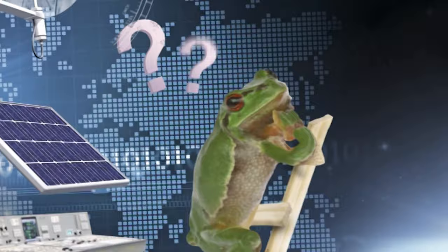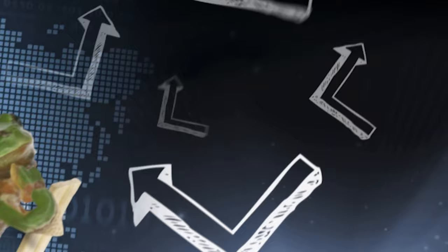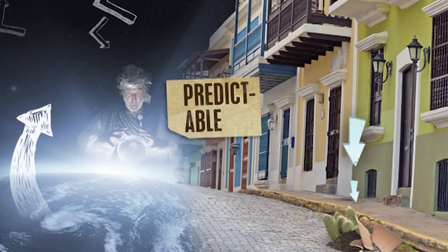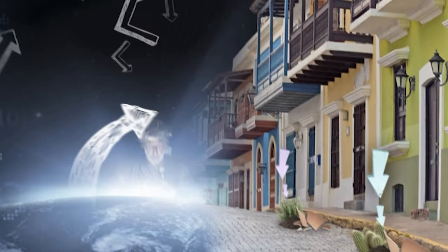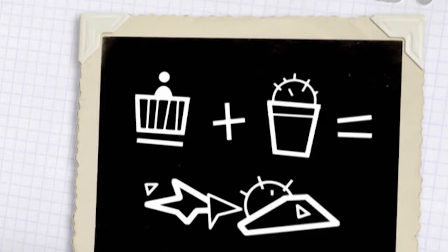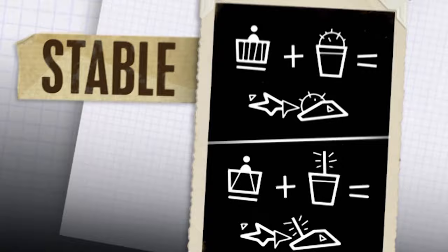Stable processes are ones that allow a clear prediction. If a plant pot falls from a balcony, it will land below the balcony on the ground. Predictable beyond doubt. Repeating the experiment at another balcony produces a similar result. In science talk, conduct an experiment with small changes to the initial conditions and get very similar results. It means you have a stable system.